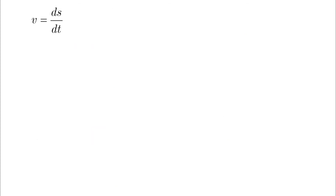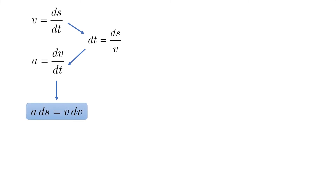In some questions, time is not part of your given information. In this case, we take dt from the velocity equation and substitute it in the acceleration. By doing this, dt is eliminated and the result is a·ds = v·dv, which is a very helpful relationship that we'll be using a lot.